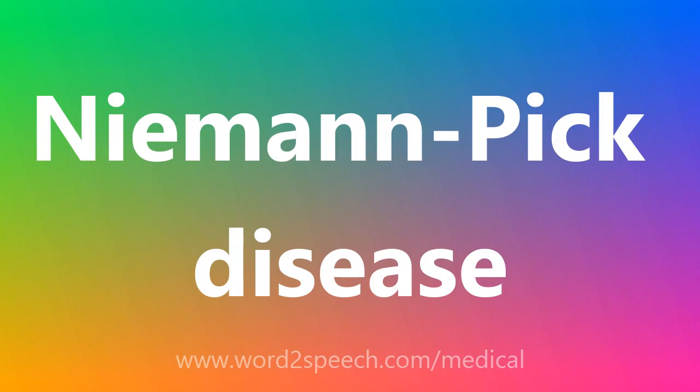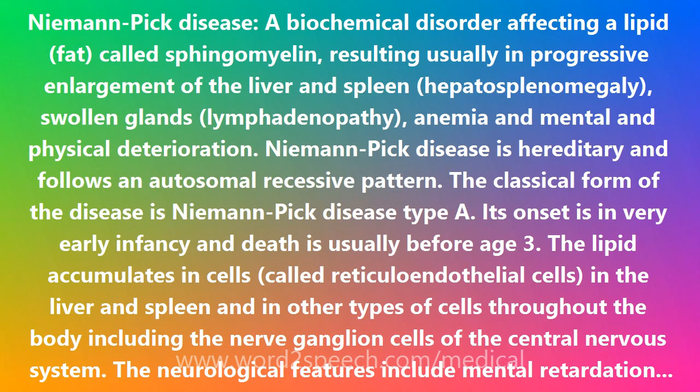Niemann-Pick disease is a biochemical disorder affecting a lipid fat called sphingomyelin, resulting usually in progressive enlargement of the liver and spleen (hepatosplenomegaly), swollen glands (lymphadenopathy), anemia, and mental and physical deterioration. Niemann-Pick disease is hereditary and follows an autosomal recessive pattern.